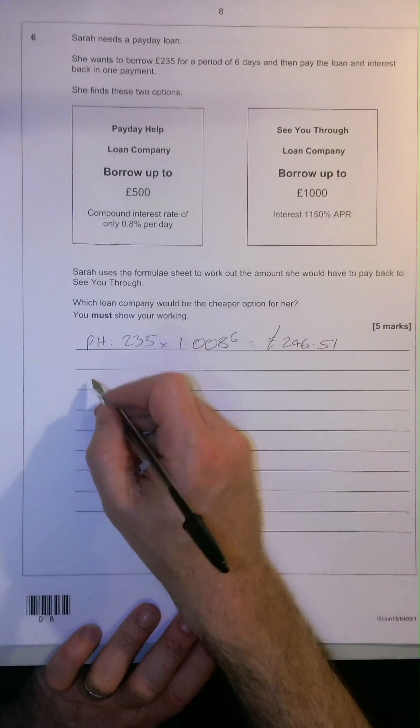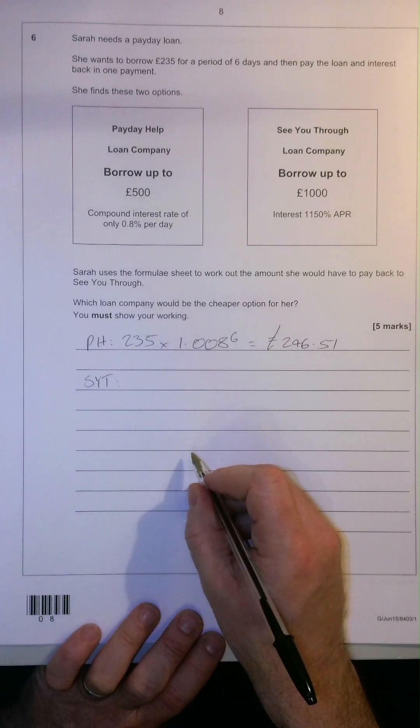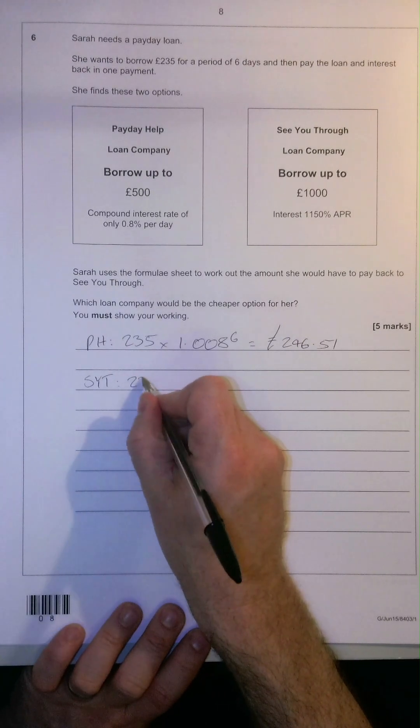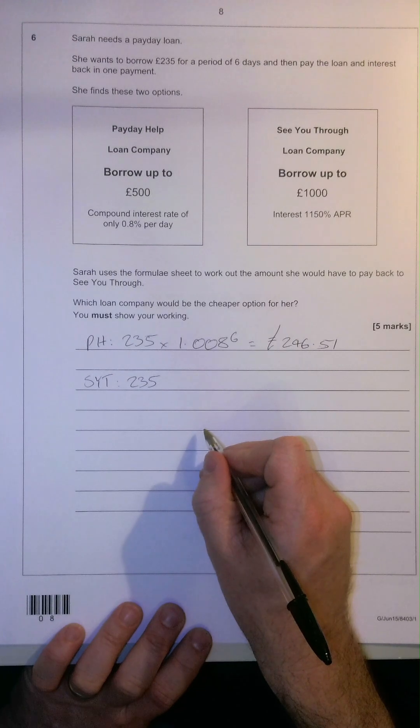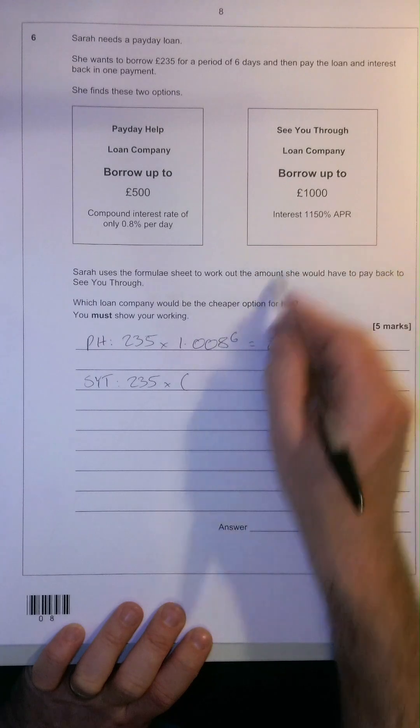What about see you through then? Well, see you through, slightly more difficult to work out. We take the £235, which of course is the amount she wants to borrow, and we times it by the more significant interest rate,